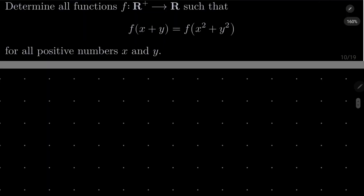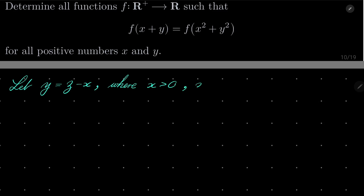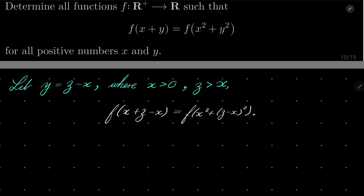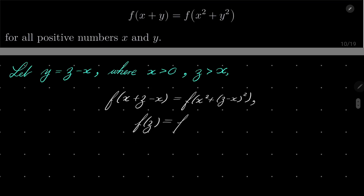So as I suggested, let y be equal to z minus x, where x is positive and z is greater than x. Our very first functional equation can be rewritten as: f(x + (z-x)) equals f(x² + (z-x)²). Or, f(z) equals f(2x² - 2xz + z²).